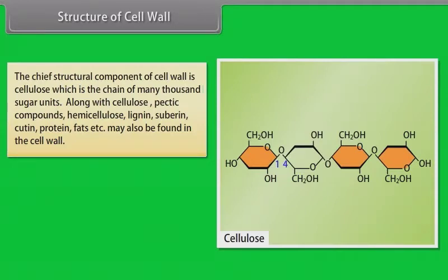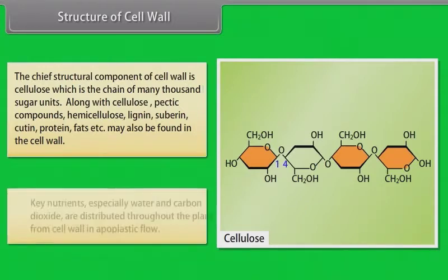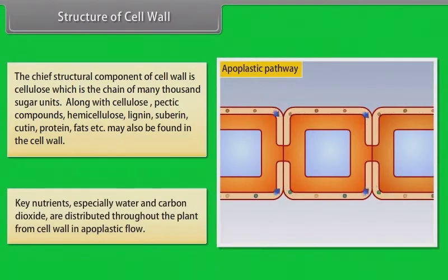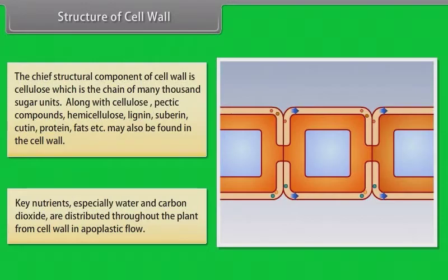Along with cellulose, pectic compounds, hemicellulose, lignin, suberin, cutin, protein, fats, etc., may also be found in the cell wall. Key nutrients, especially water and carbon dioxide, are distributed throughout the plant from cell wall in apoplastic flow.